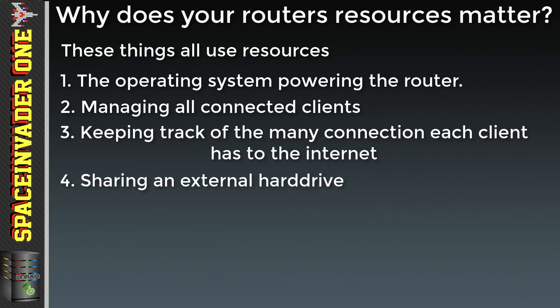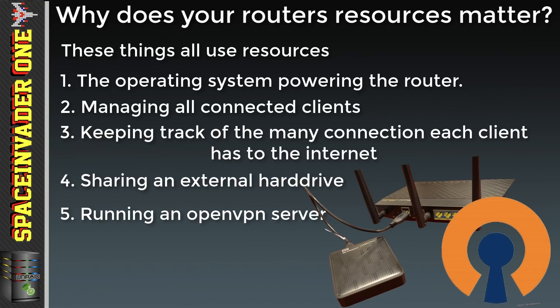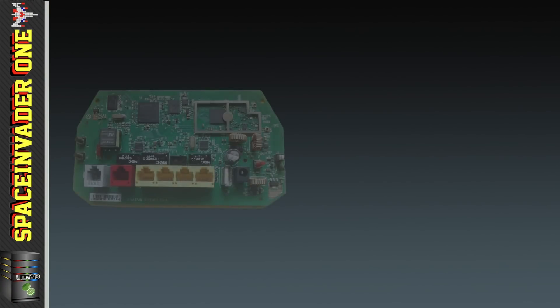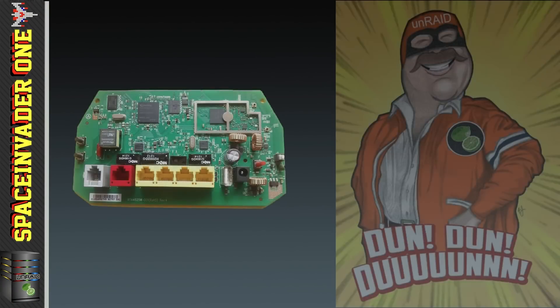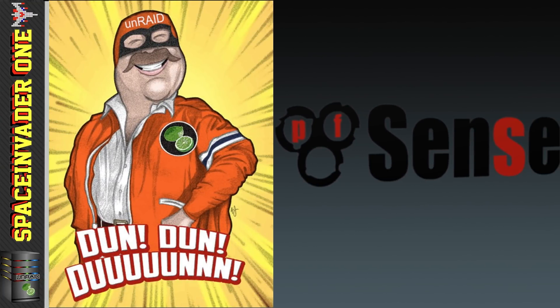Routers often do more duties than this. Some allow you to plug a hard drive in and use it as a file server, while some of the more expensive ones allow you to run an OpenVPN server. All of this uses up resources. And what happens when it's all used? Well, something has to give. So the cheap hardware that these routers use may not be good enough for what power users want from their network. We'll get much better results building our own router with PFSense.